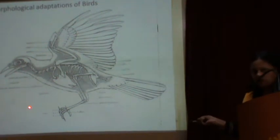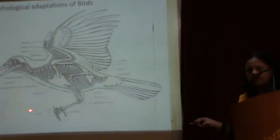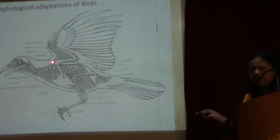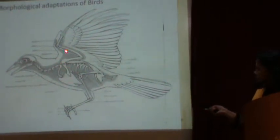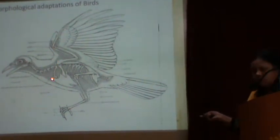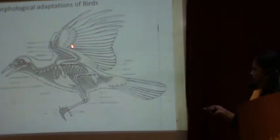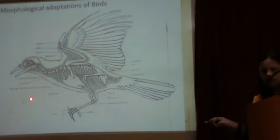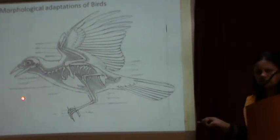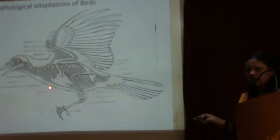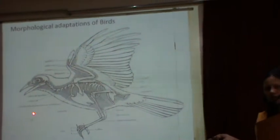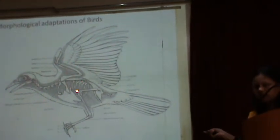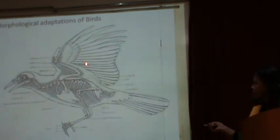In birds, the forelimbs are modified into wings. The bones present in the forelimbs internally support the wings. These wings are provided with muscles — two types of muscles: pectoralis major and pectoralis minor. These muscles provide the strength and energy for the wings during flight.